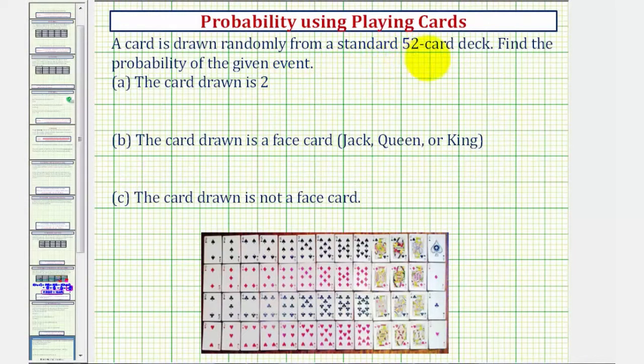A card is drawn randomly from a standard 52-card deck. Find the probability of the given event. We have three probabilities to find.